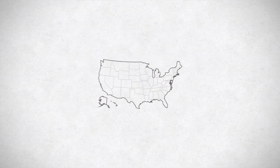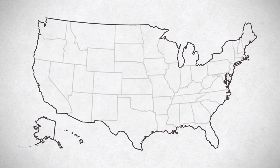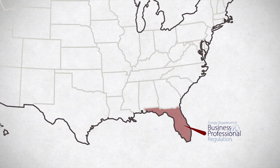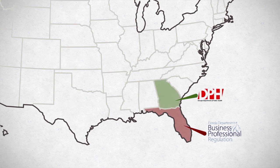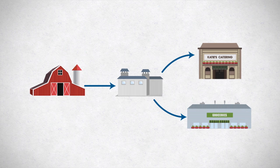Depending on your jurisdiction, certain food establishments are regulated by certain departments. For example, the Department of Business and Professional Regulation is the regulatory agency in Florida, and the Georgia Department of Public Health is the regulatory agency in Georgia. The food safety system is a continuum that begins with food producers and ends with point-of-service establishments, such as grocery stores and restaurants.